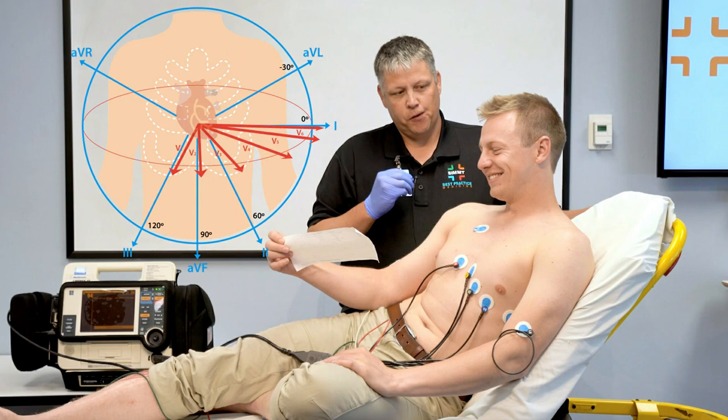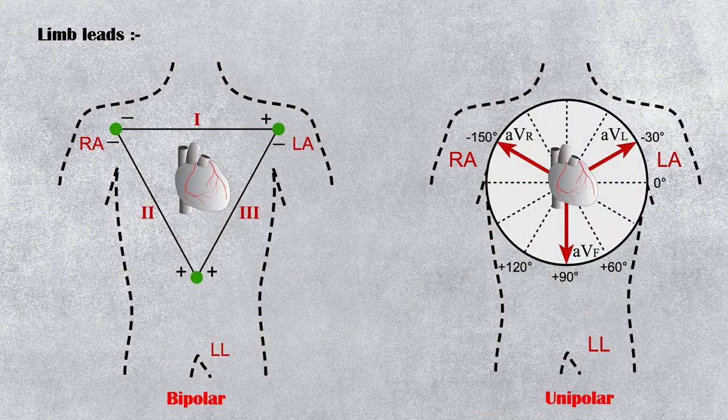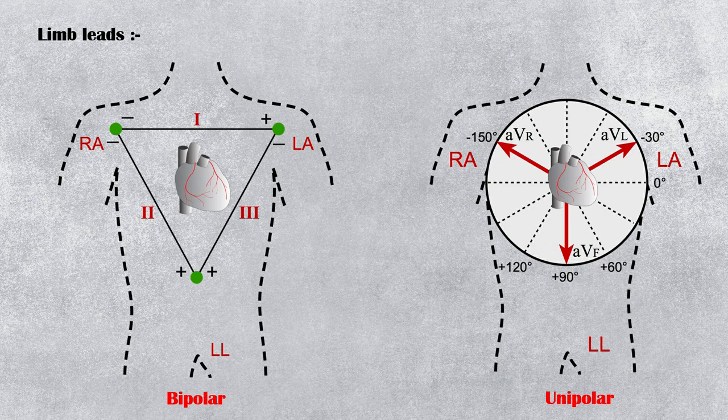The conventional ECG machine consists of 12 leads, 6 limb leads and 6 precordial leads. There are two types of limb leads, bipolar leads 1, 2, and 3, and augmented unipolar leads.